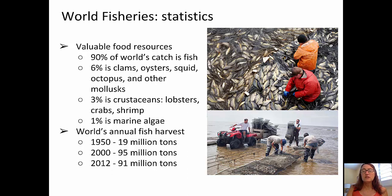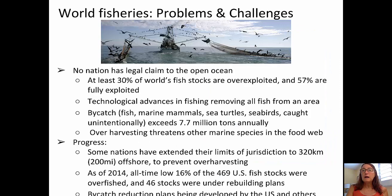Our fish harvest has increased dramatically over time. In 1950, we were only harvesting about 19 million tons from the seas. By 2000, about 95 million tons. And in 2012, 91 million tons — a slight decline, possibly due to fish farming.